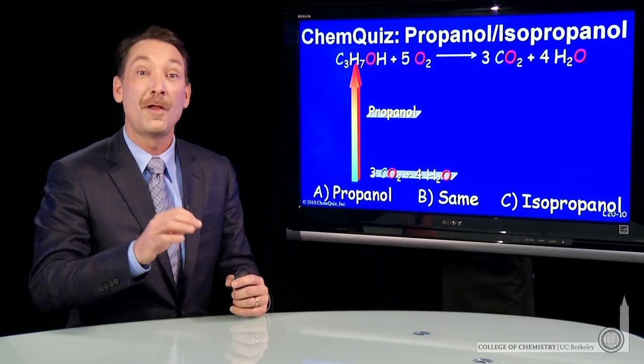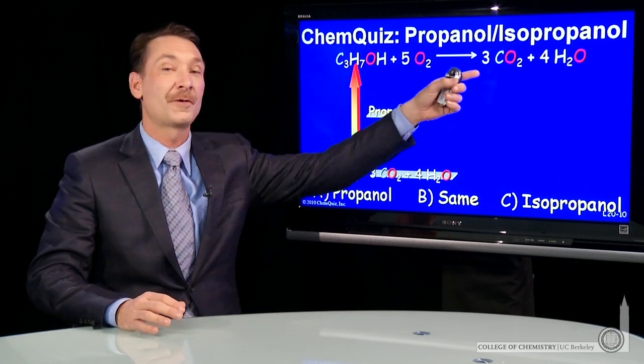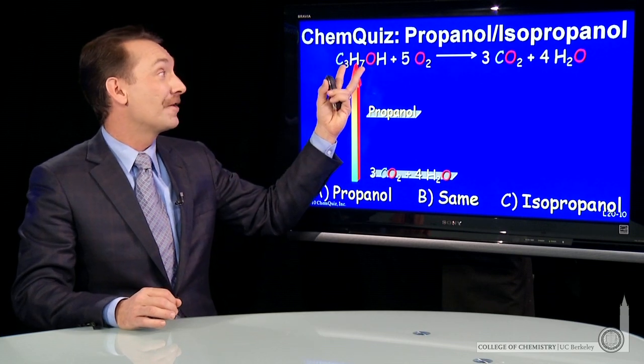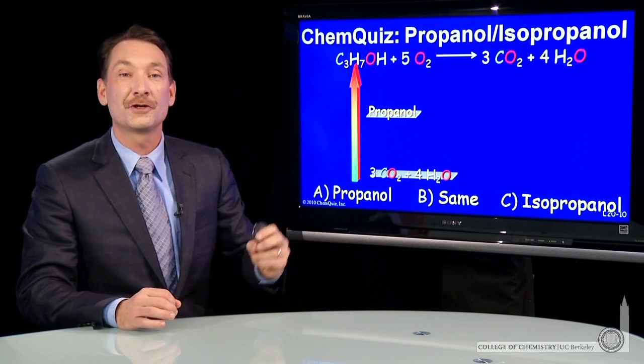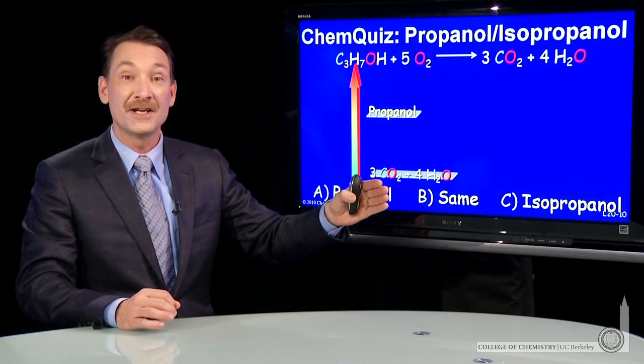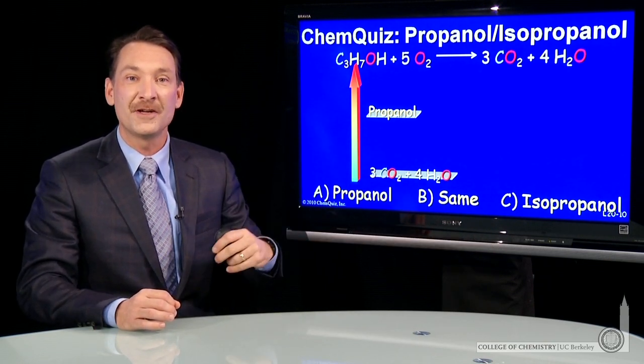Propanol and isopropanol both burn in oxygen to form carbon dioxide and water. And they are the same chemical formula, but different structure. They're structural isomers. Does that structural isomerization cause a different enthalpy of burning?